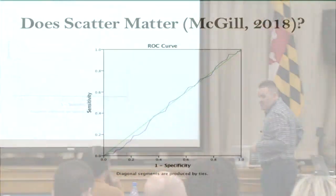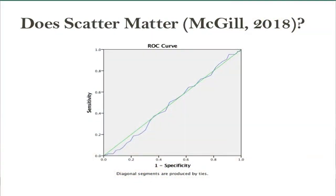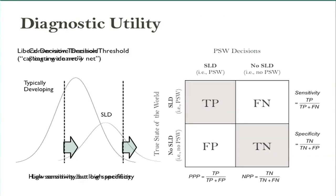Does scatter matter? I looked at scatter for the KABC-2 — highest to lowest score — because they say 23 points is significant, that you should invalidate the FSIQ and it could be an indicator of LD. When we do diagnostic utility stats, we can plot ROC curves. I talked before about sensitivity versus specificity — that's really just talking about true positives versus false negatives versus true negatives.